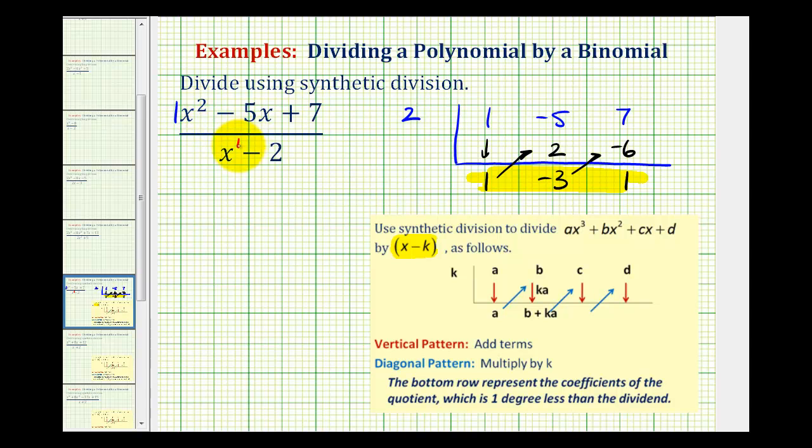Since two minus one is equal to one, this term here represents the coefficient of the degree one term. This would be our constant term, and this would be our remainder.